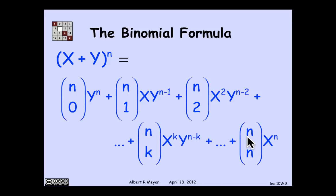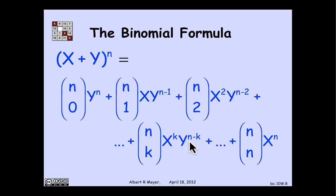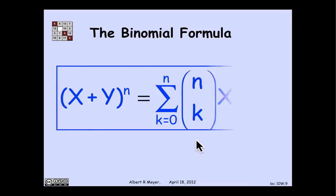More generally, we didn't need the 1; we used (1 + x) just to make the structure easier to follow. For (x + y)ⁿ, the coefficients are the same: n choose 0 times yⁿ, plus n choose 1 times x·y^(n−1), and so on. Now we're choosing x or y instead of x or 1 from each factor, so the x and y degrees always sum to n. If we choose k x's, we must have chosen n minus k y's. This is expressed concisely in sigma notation as the binomial formula.